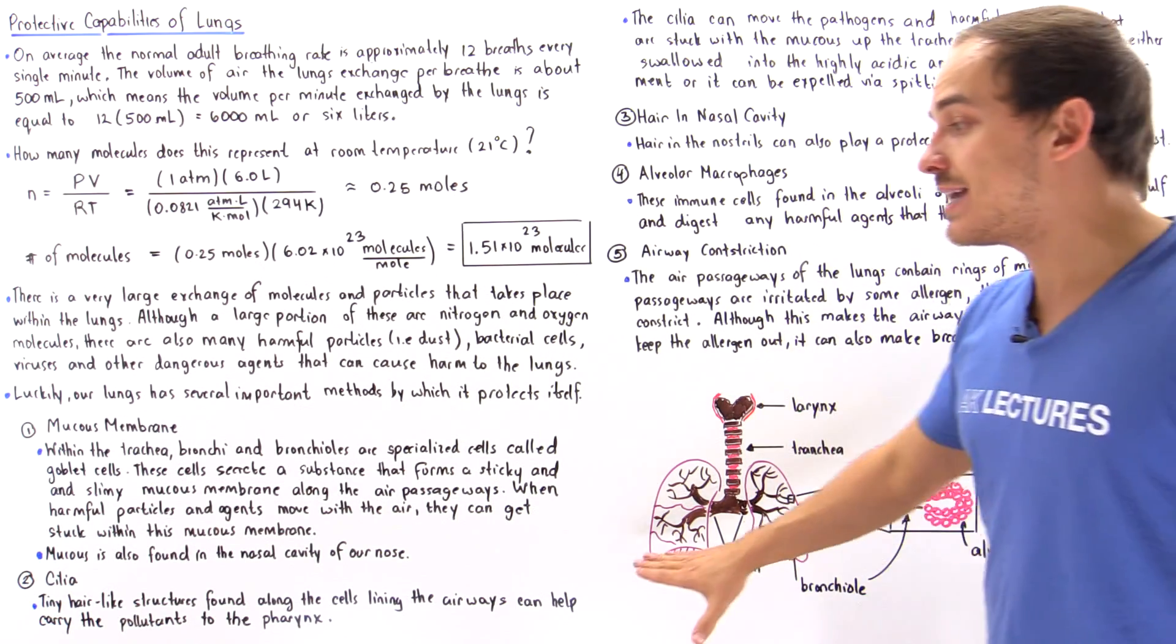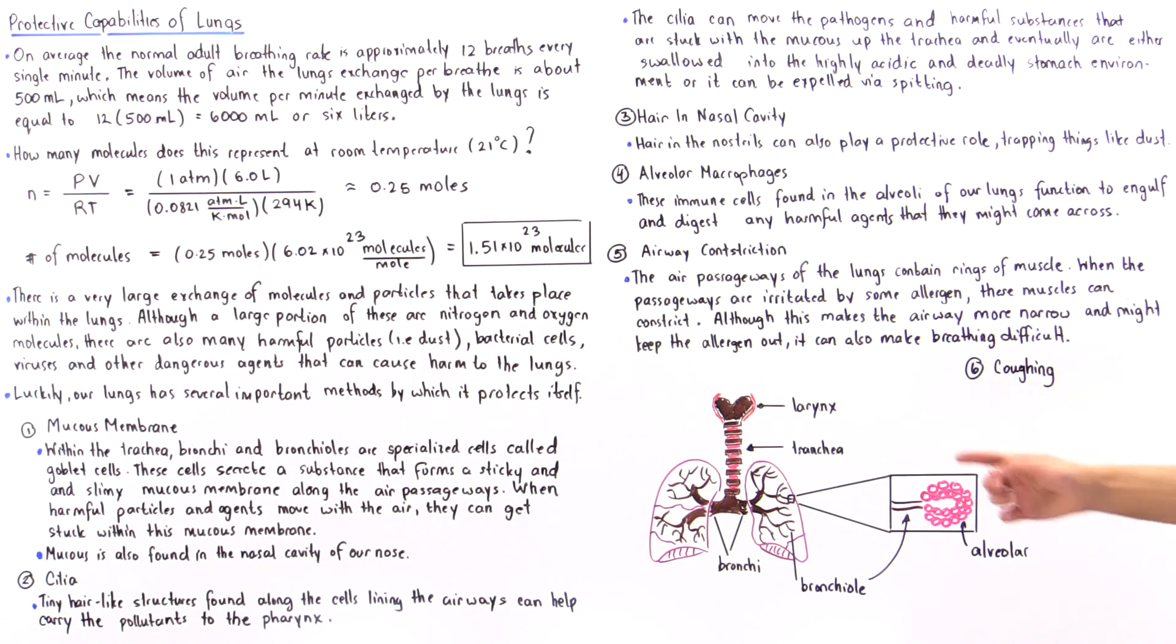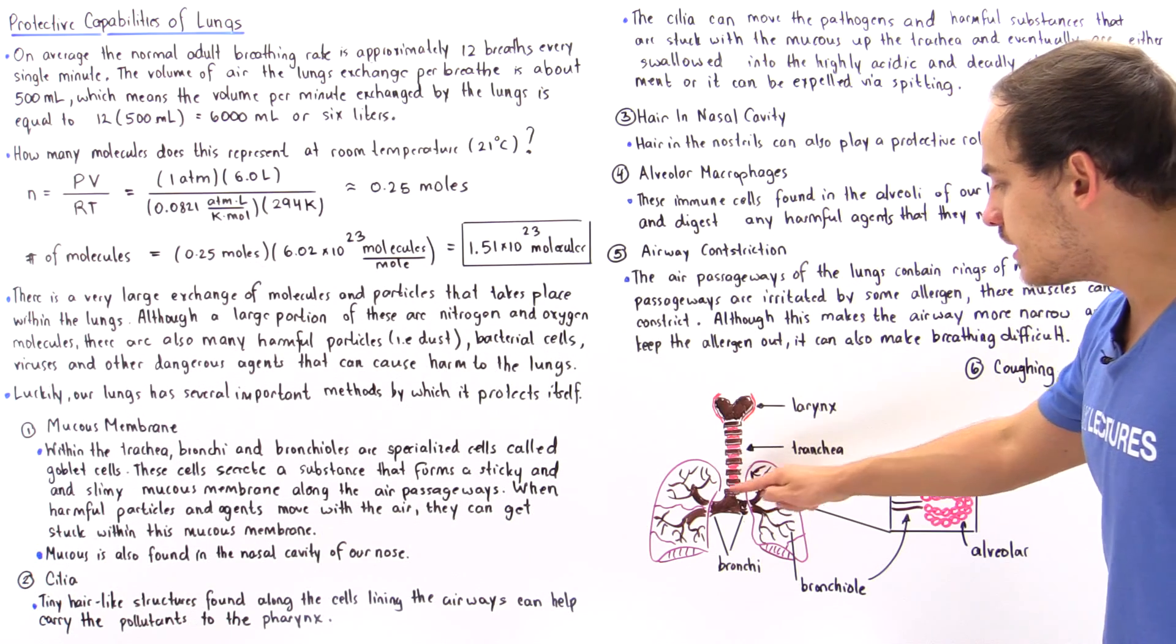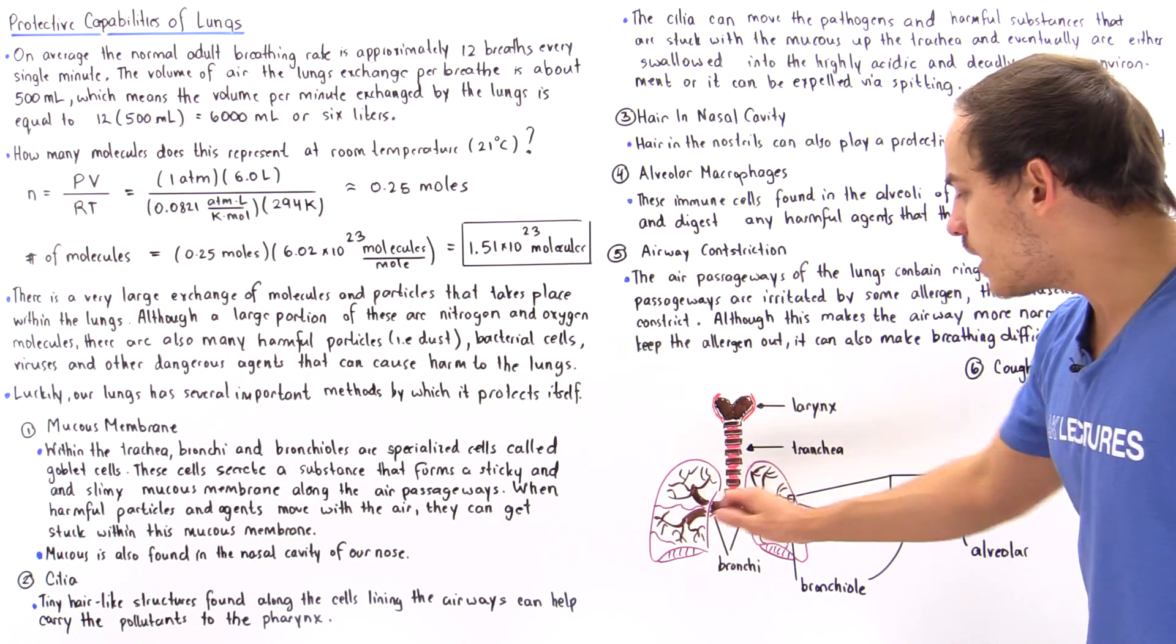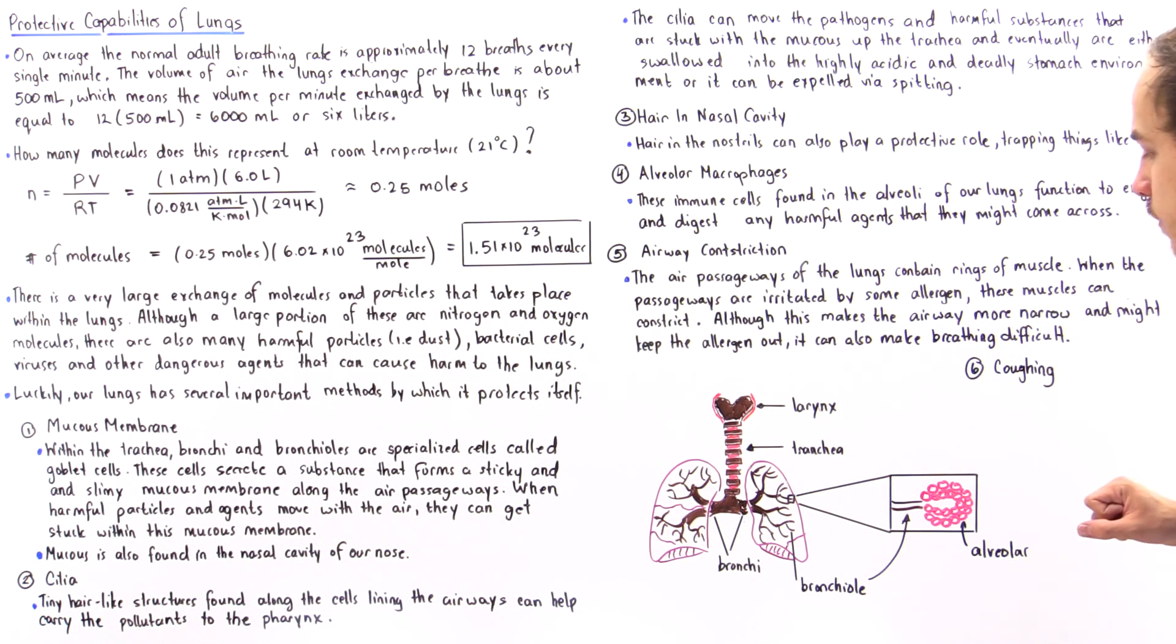We also have tiny hair-like structures found along the cells lining the airways, and these can help carry the pollutants to our pharynx. If we take a look at the diagram of our respiratory system: this is our trachea, these are the bronchi, these are our bronchioles. If we zoom in on the terminal portion of our bronchioles, we get our alveoli.